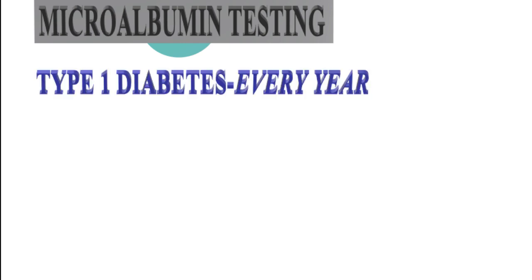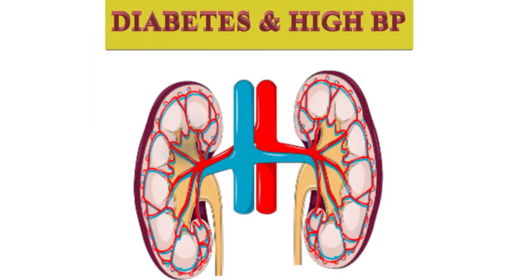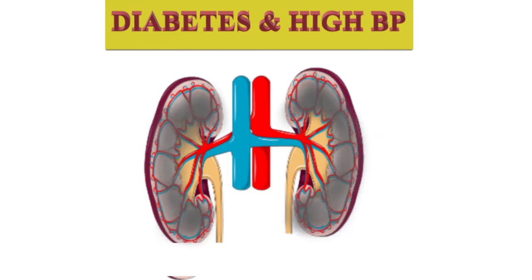Who to test: Type 1 diabetes — every year after 5 years of diagnosis. Type 2 diabetes — once a year, immediately after diagnosis. Diabetes is the major cause of kidney failure and leading cause of microalbuminuria because of high blood sugar levels. Over time, the extra sugar damages the small blood vessels in the kidney, making them harder to clean the blood. Diabetes also damages the nerves, which may further damage the kidneys.